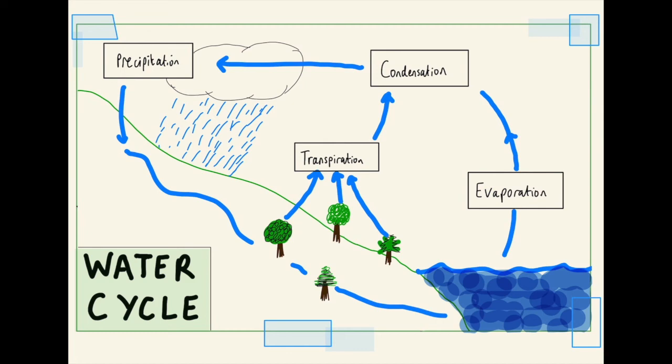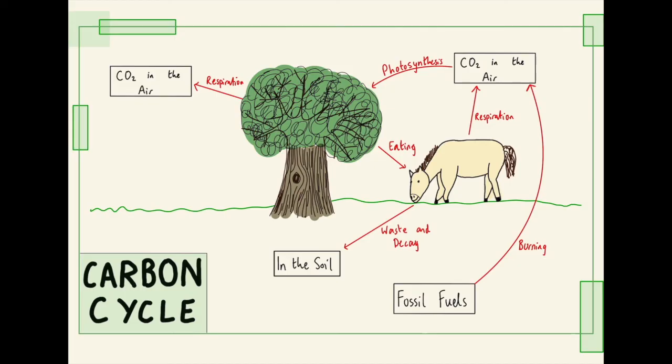Next, we have the carbon cycle — similar idea, but there is a little bit more going on. Trees and animals are effectively the main feature. One process the tree does is photosynthesis and respiration, where it takes in CO2 and releases oxygen back into the air. The horse itself is respiring, which puts CO2 into the air. The horse eats leaves and plants on the floor, which is waste and decay, putting carbon into the soil. Fossil fuels also in the soil, when eventually burnt, put CO2 back into the air. Then the plants take in the CO2 and the horse eats the plant, and the whole cycle continues similar to the water cycle.